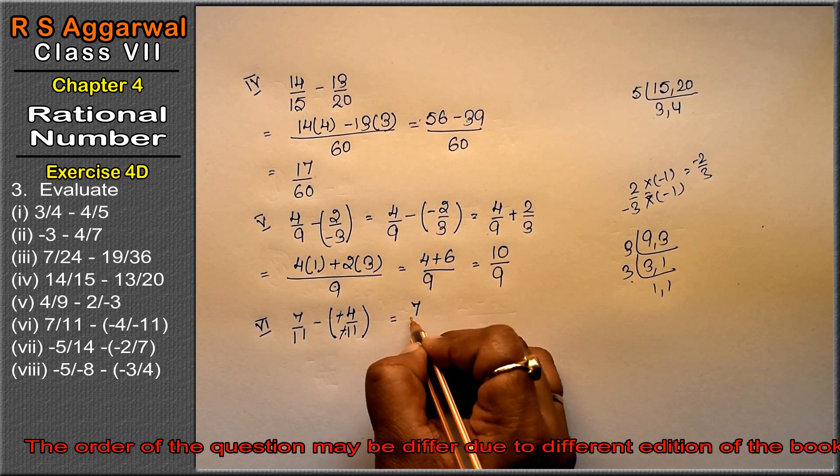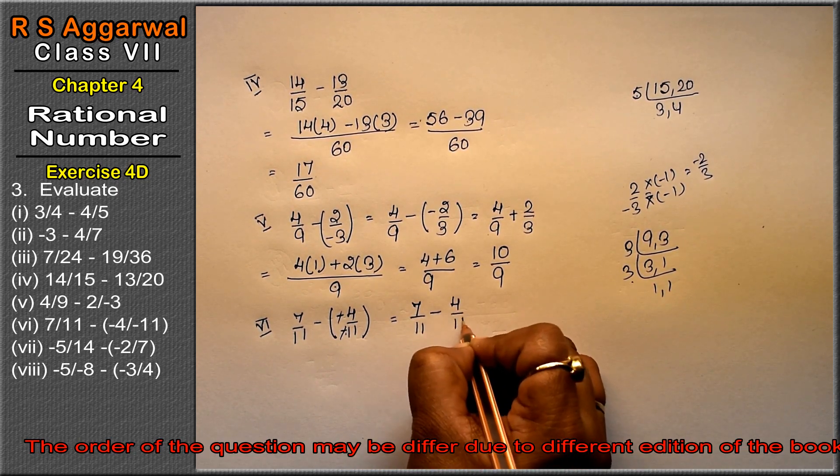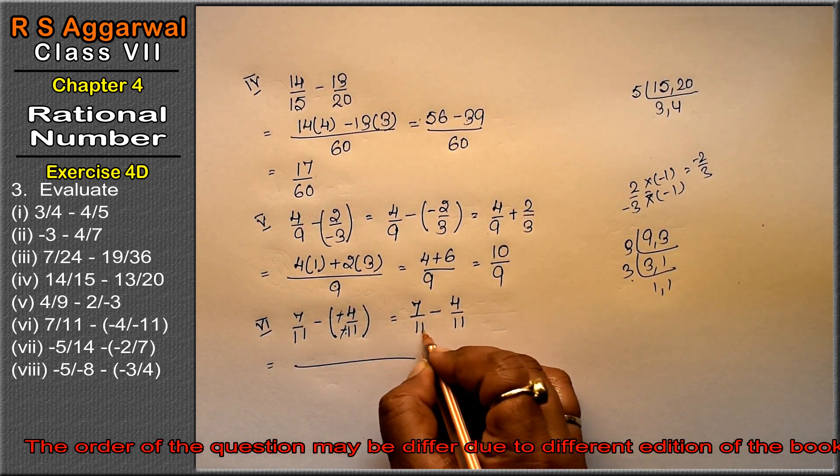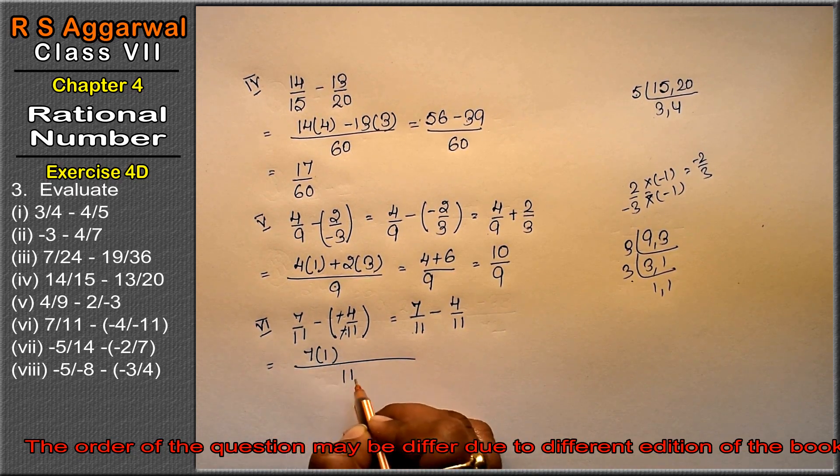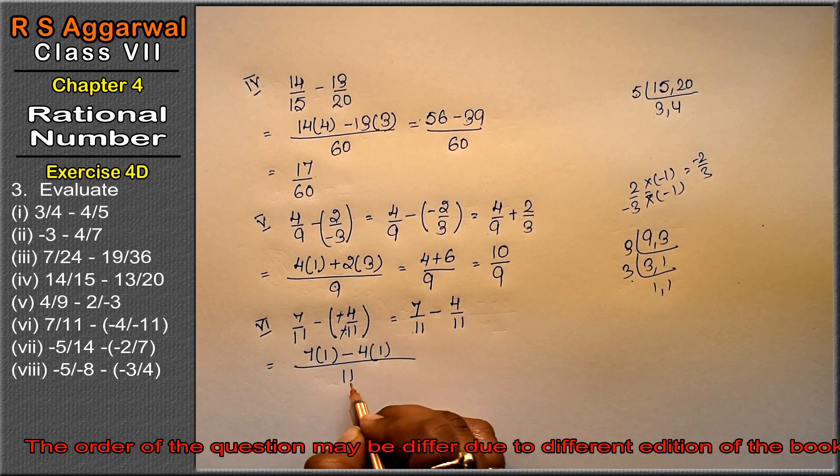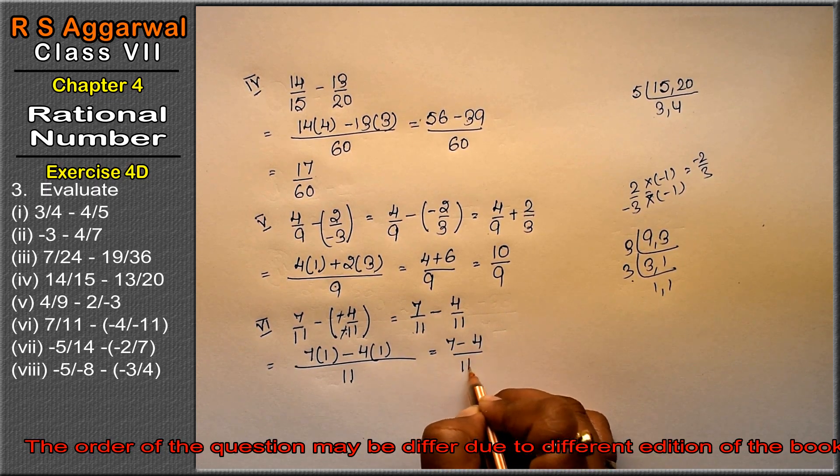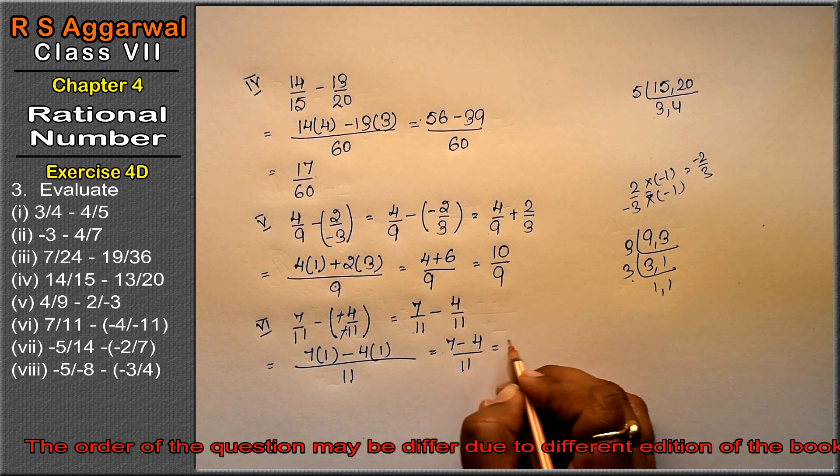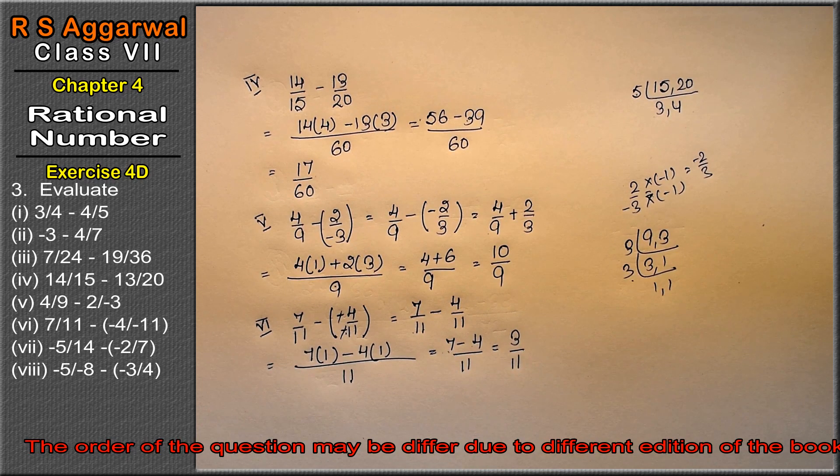Sixth part: 7 upon 11 minus negative 4 upon 11. Both denominators are 11, so LCM is 11. We have 7 times 1 minus 4 times 1 upon 11. This is 7 minus 4 upon 11, which means opposite signs subtract, giving us 3 upon 11 as the answer.